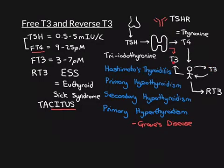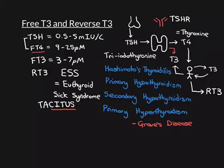Remember, that's the main actual source of T3. Only a little bit of T3 comes from the thyroid in the usual situation — it massively goes up in early stage Graves' disease — but most of the T3 normally is produced by peripheral conversion of T4 into T3. So if we're reducing peripheral conversion of T4 into T3 because it's all being channelled into reverse T3, the free T3 level is going to go down.